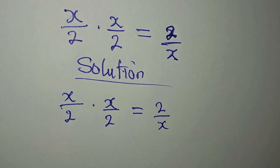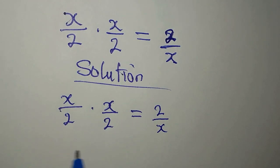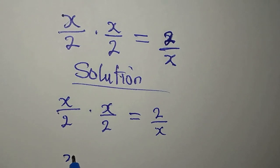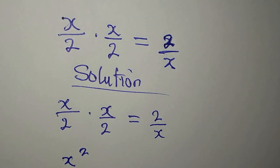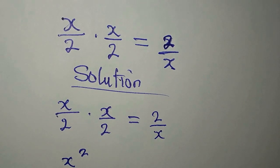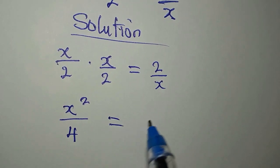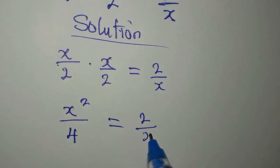The first step is to deal with what you have on the left hand side. x times x, that would be x to the power of 2 over 2 times 2, that is 4. Then on the other side, we have 2 over x.